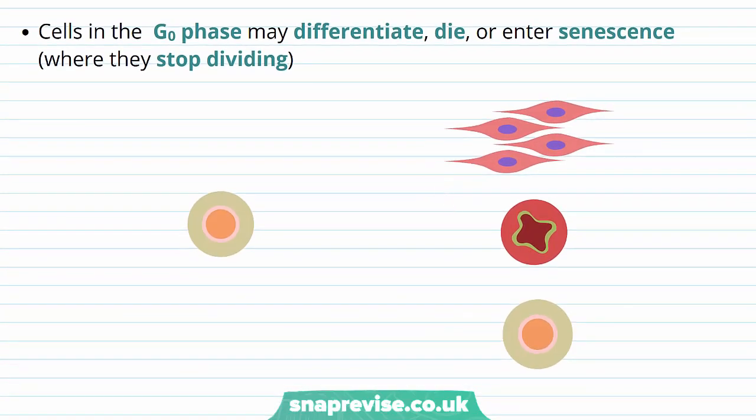The cells in the G0 phase can do different things. They're obviously not going to divide, but they could differentiate. Differentiate meaning that they specialize into a particular type of cell, like a muscle cell. And therefore they keep this fact that they're not going to divide. They could also die as well. So in embryo development, a lot of cells between, for example, your fingers that were there or between your toes end up dying to create gaps that are important for your limbs. Or they can enter senescence or aging where they just stop dividing overall and just become sort of at rest.